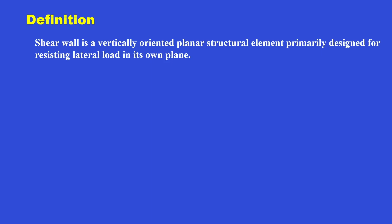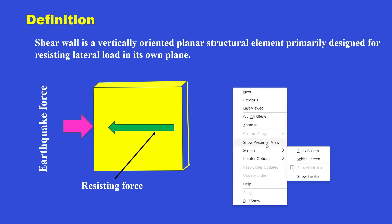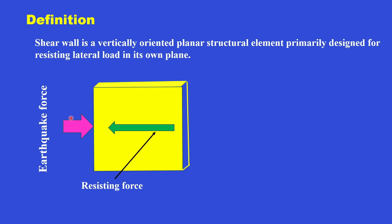Let us understand this through a figure. Here is a shear wall shown, and an earthquake takes place from left to right. A resisting force is acting in the opposite direction. This resisting force is acting in its own plane — the vertical plane of the shear wall. This is called the in-plane action, where the action is in the same plane as the earthquake load acting in the vertical plane.